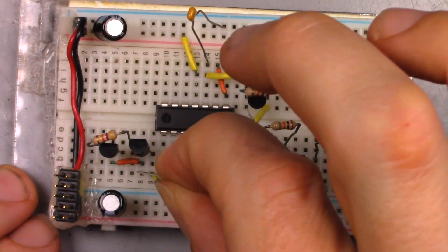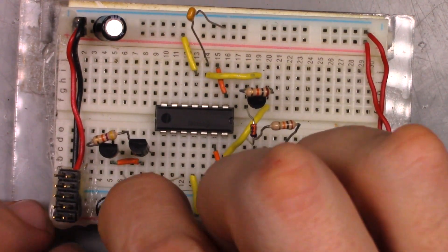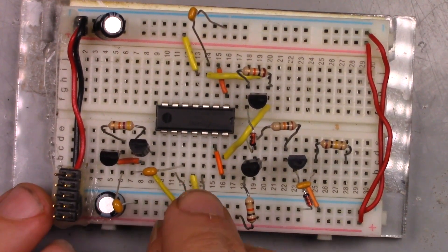Now the 2.1 microfarad capacitors, and the ground reference resistor to the positive input on the op amp.